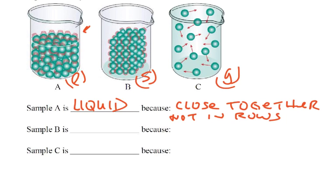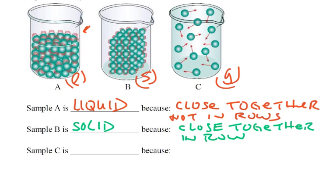Sample B. Sample B, I would say, is a solid. And again, I would say that they're close together. And that little crystal structure there lets me know that that's what's solid.